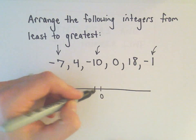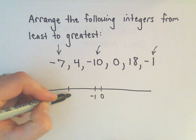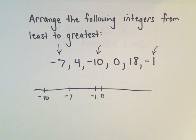Well, let's see, if there's 0, negative 1 would be right about there. I'm not going to fill in every digit, but there's negative 7. And negative 10 would be the furthest one to the left.